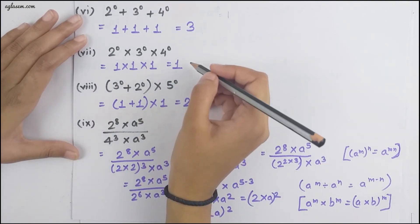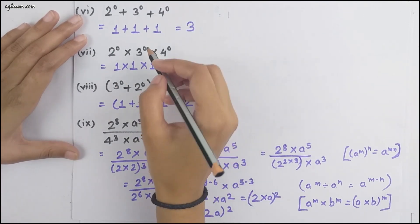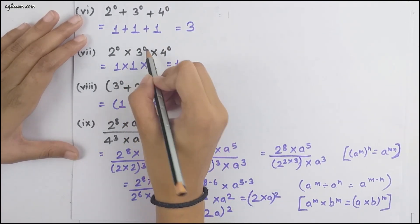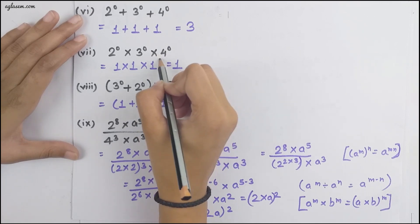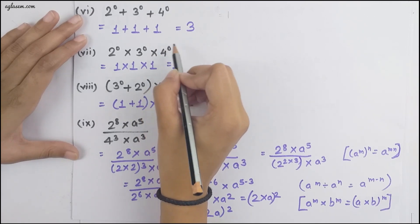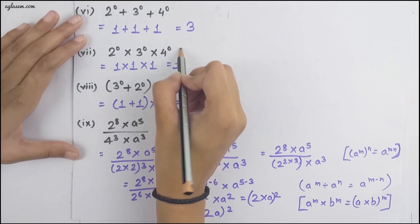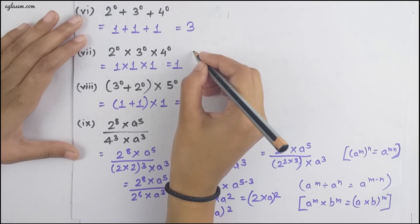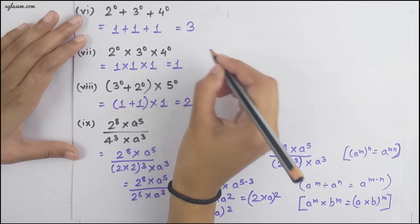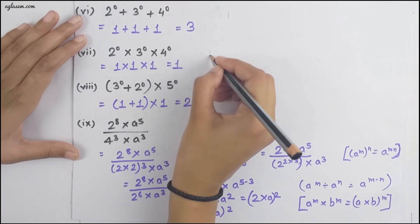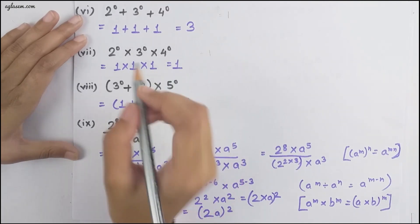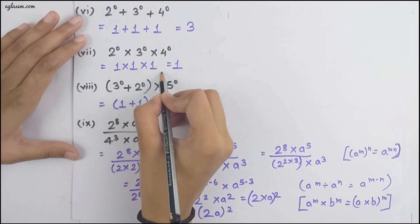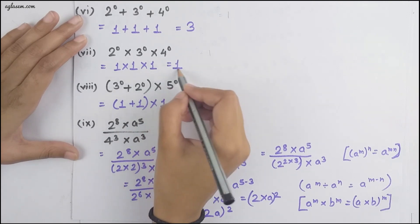Moving to the seventh part: 2⁰ × 3⁰ × 4⁰. Any number whose power is 0 equals 1, so we have 1 × 1 × 1 = 1.